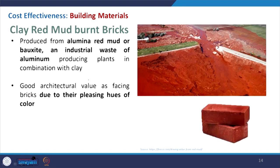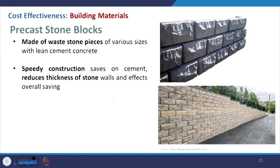Coming to clay red mud burnt bricks — alumina red mud or bauxite waste is used to get these bricks. One advantage is their prominent red colour: if you plan well for an external exposed brickwork construction, that can give a very pleasing environment as you can see in this slide. Coming to precast stone blocks — made from waste stone pieces where stone has been cut for some purpose, cut into a very nice manner that can be easily used. Stone dust can also be added to cement concrete mortar to make a precast block that is slightly bigger than conventional brick size. This gives nice aesthetic value as well as good strength, the construction is speedy, and it can save the use of cement.